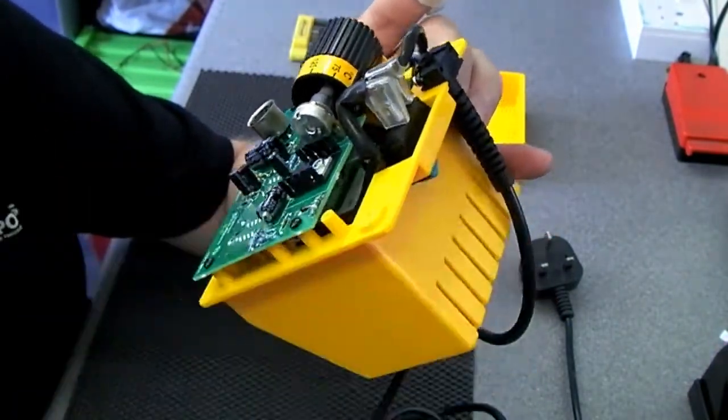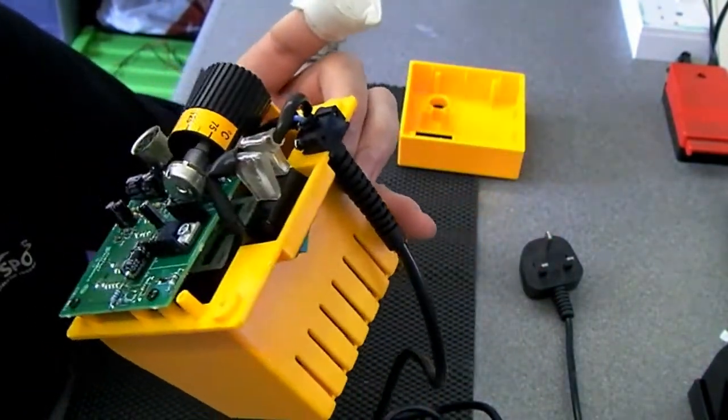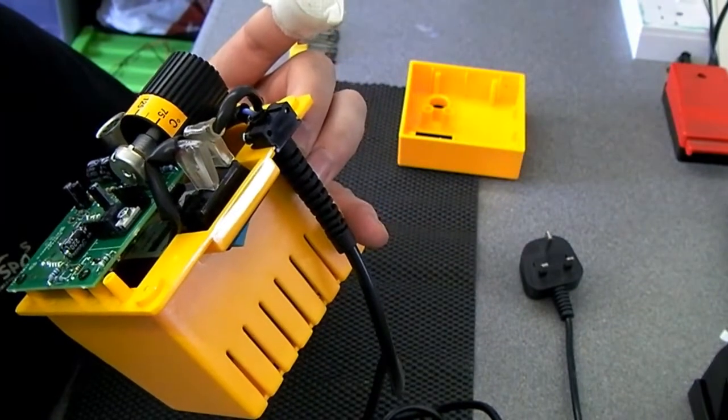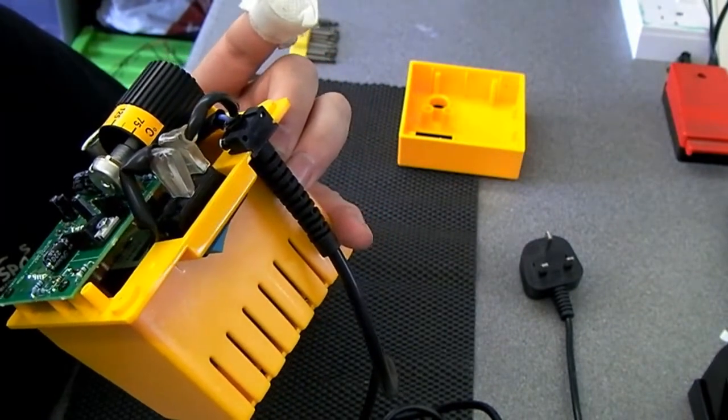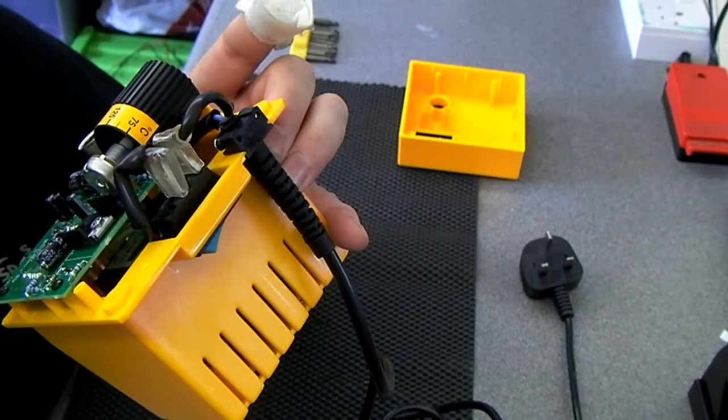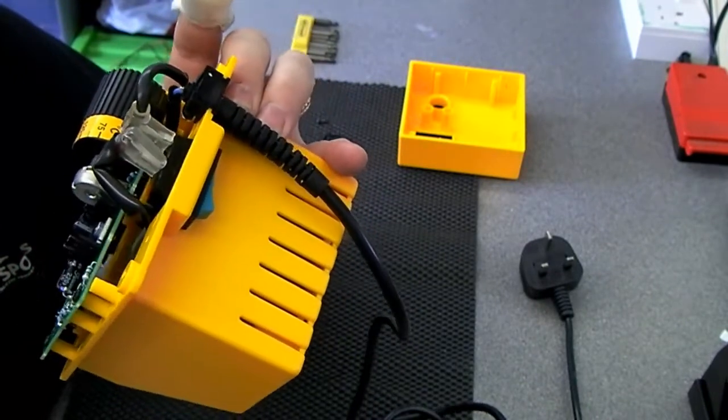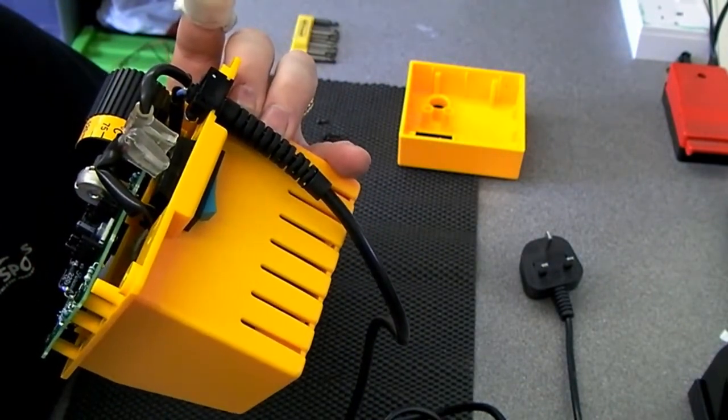This device on the small heatsink there is a PGA12010A2. BT136-600.